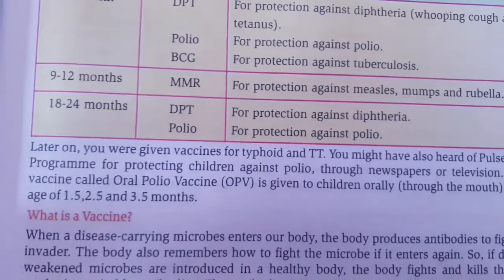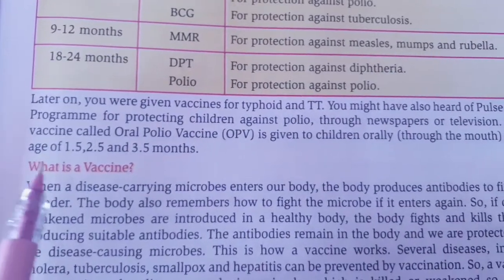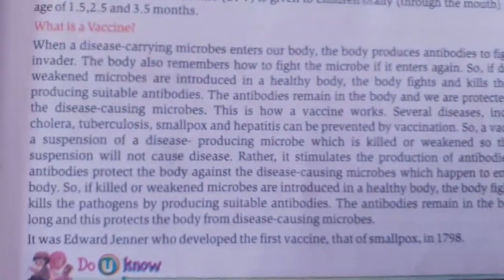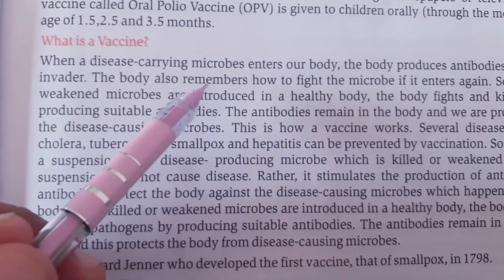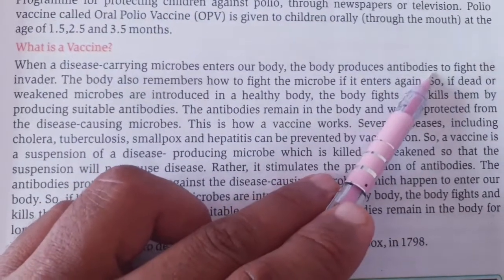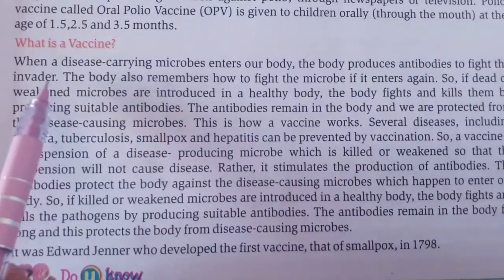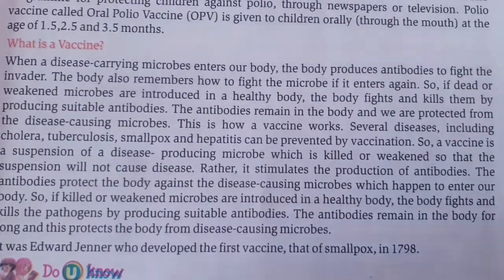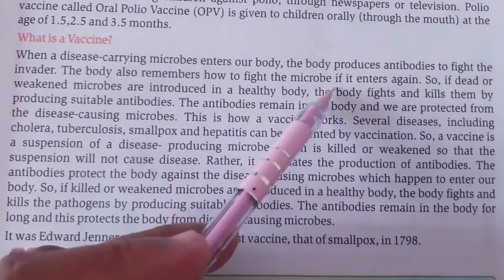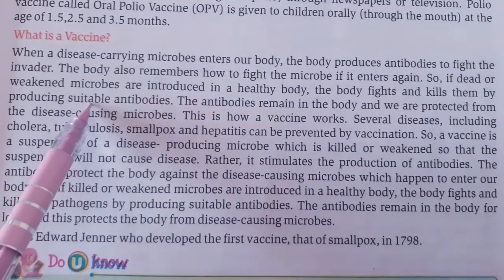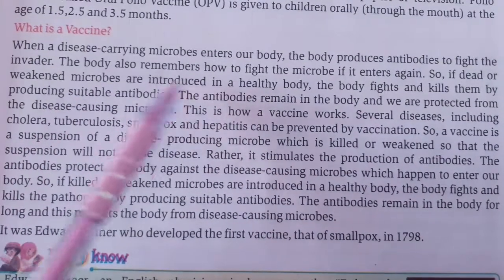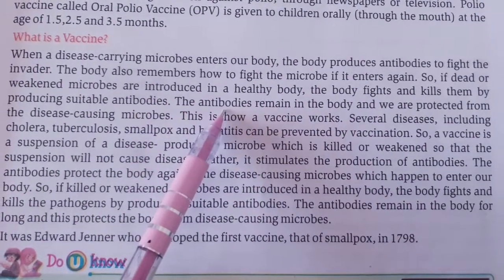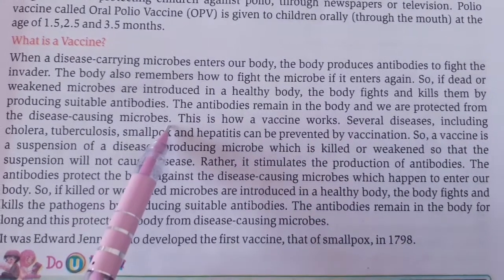Vaccines like DPT and polio vaccines are used from 18 to 24 months of age. Vaccines cause the body to produce antibodies that fight disease. Antibodies remember how to fight specific diseases, so when the disease-causing microorganism enters the body again, the antibodies are ready to fight it.